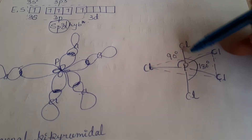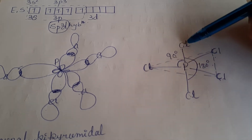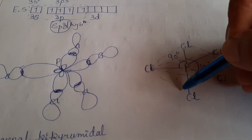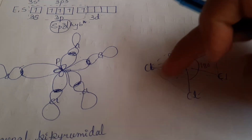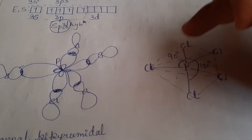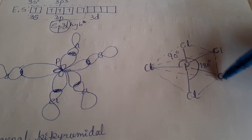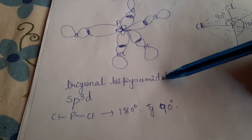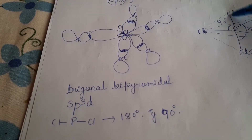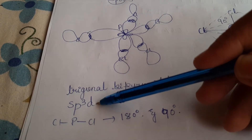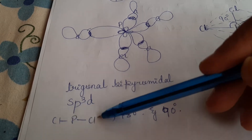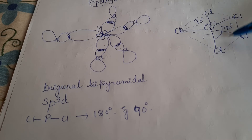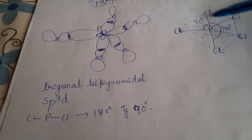The two Cl atoms above and below show 180 degrees, while the three trigonally arranged Cl atoms show a 90 degree bond angle with respect to phosphorus. This gives the molecule a trigonal bipyramidal shape — the bottom forms one pyramid and the top forms another pyramid. The hybridization is SP³D, with the phosphorus-Cl axial bond angle of 180 degrees and the equatorial bond angle of 90 degrees.